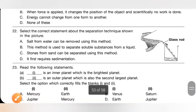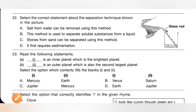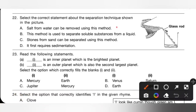Question 22: Select the correct statement about the separation technique shown in the picture. Option A — salt from water can be removed using this method — incorrect; salt is removed by evaporation. Option B — this method separates soluble substances from a liquid — incorrect; it separates insoluble substances. Option C — stones from sand can be separated using this method — no, that uses filtration or sieving. Option D — it first requires sedimentation — correct. Sedimentation is the process of letting insoluble heavier components settle at the bottom. Option D is the correct answer.